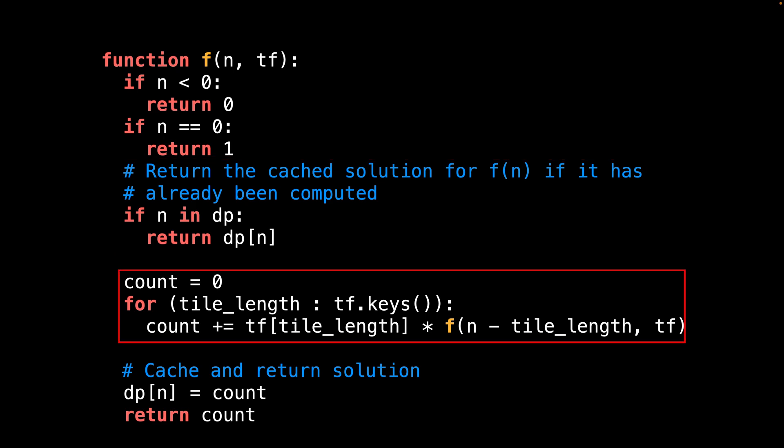Afterwards, we actually compute the number of different ways to tile the board. To do this, we compute the solution for f(n) using the linear recurrence relation described previously. This involves looping through the tiles of different lengths, and summing up the solutions for all the smaller board sizes we were able to create taking into account the frequency of each tile length. After all the recursive calls have finished, we can cache the solution for f(n) and return the tile count.